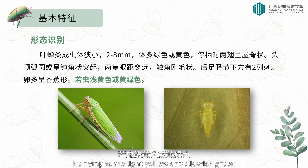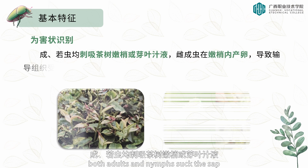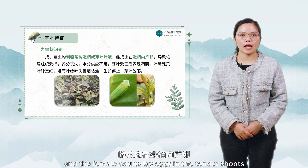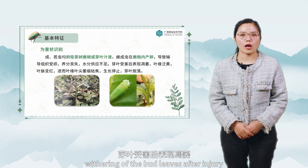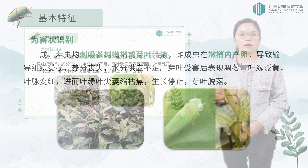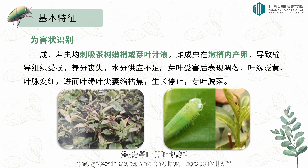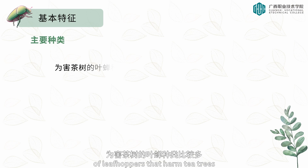There are two rows of thorns under the posterior tibial segment. The eggs are mostly banana-shaped. The nymphs are light yellow or yellowish green. When harming tea trees, both adults and nymphs suck the sap of tea tree buds and leaves, causing loss of nutrients, insufficient water supply, and withering of bud leaves. After injury, leaf edges turn yellow, leaf veins turn red, the leaf tip shrinks and scorches, growth stops, and bud leaves fall off.